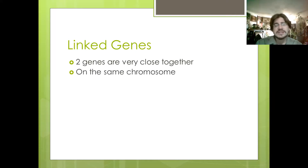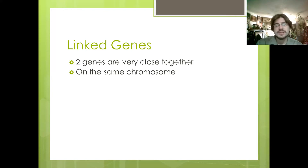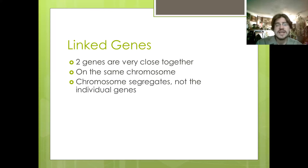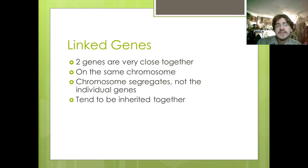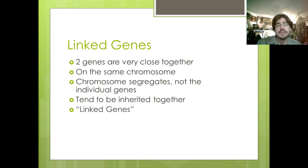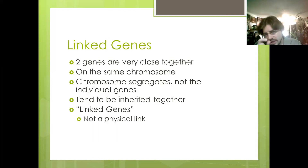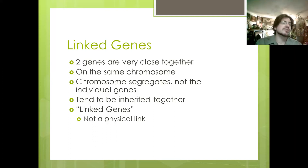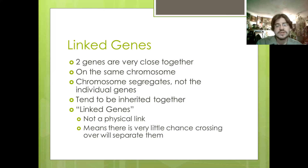They tend to be inherited together. Remember, the chromosome segregates, not the individual genes. So when two genes are on the same chromosome, they segregate together. When they're linked, they tend to be inherited together even though crossing over occurs all the time. So they're linked genes because they're inherited together — and it's not a physical link. They're so close together on the chromosome that it's extremely rare for crossing over to separate them.